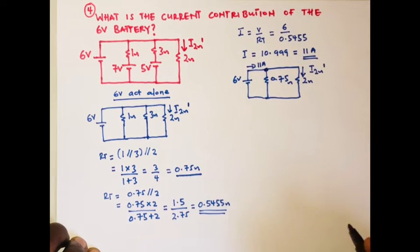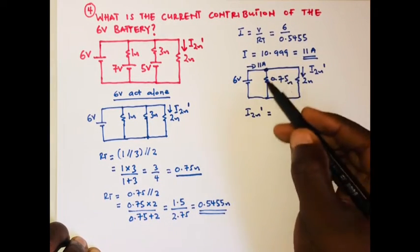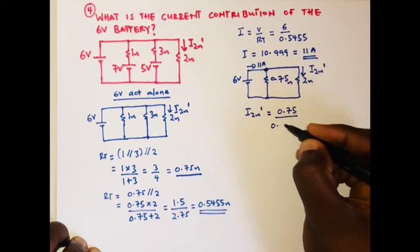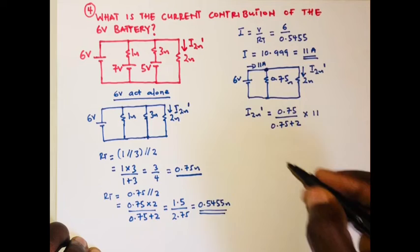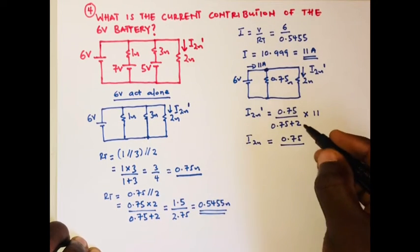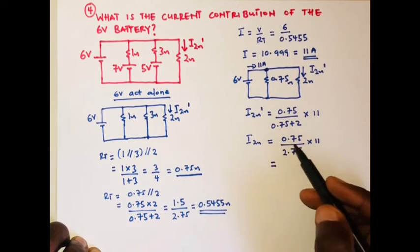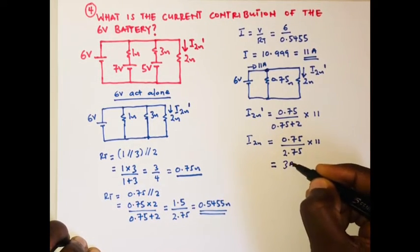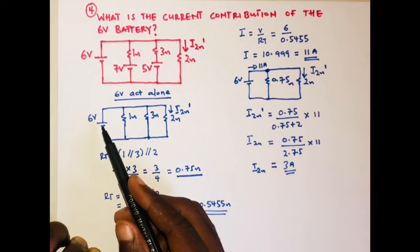Using the current division rule, I₂Ω prime equals the other resistor value — 0.75 — divided by the sum of the two resistors, 0.75 plus 2, times the total current of 11. So we have 0.75 divided by 2.75, times 11, which equals 3 amperes. The current flowing through the two ohm resistor when the six volts is acting alone is 3 amperes.